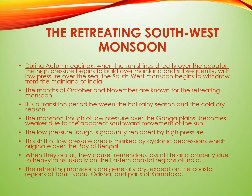Hence the months of October and November are known for the retreating monsoon. It is a transition period between the hot rainy season and the cold dry season. The monsoon trough of low pressure over the Ganga plains becomes weaker due to the apparent southward movement of the Sun. The low pressure trough is gradually replaced by high pressure, and the low pressure conditions are transferred to the center of the Bay of Bengal by early November. This shift of the low pressure area is marked by cyclonic depressions which originate over the Bay of Bengal.